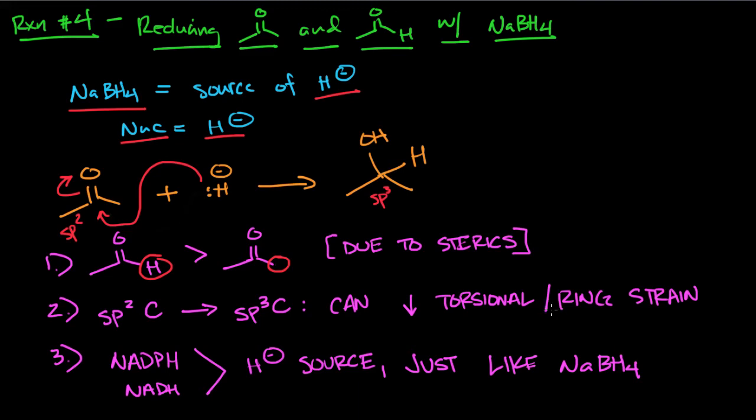The thing is, 120 degrees is the angle for an SP2. 109 degrees is the angle for an SP3 carbon, and by converting an SP2 carbon to an SP3 carbon, that can bring you closer to the angle of, let's say, a cyclobutanone ring.